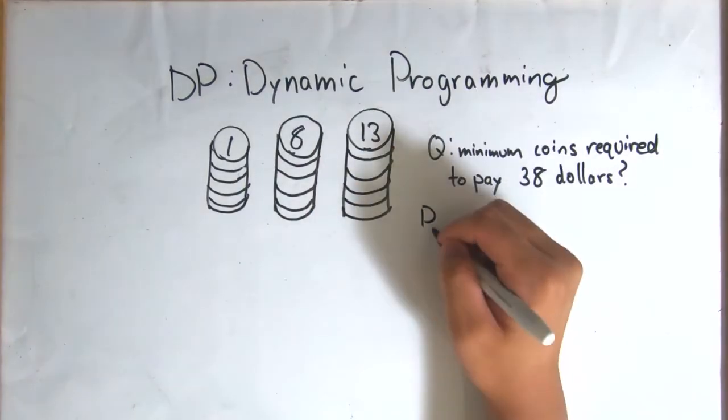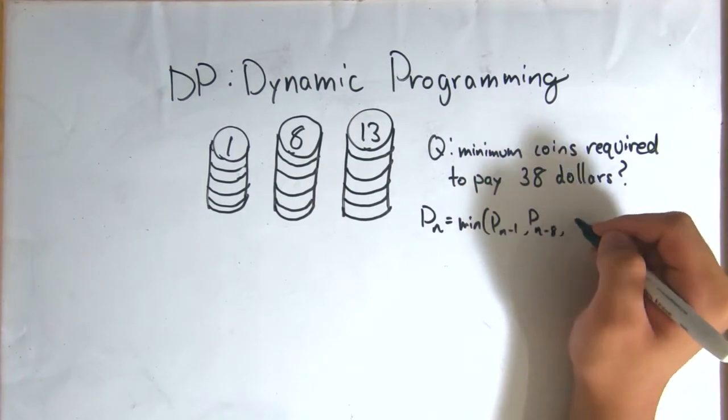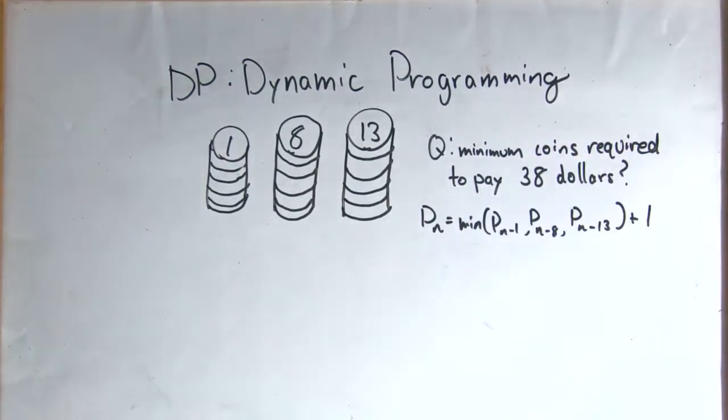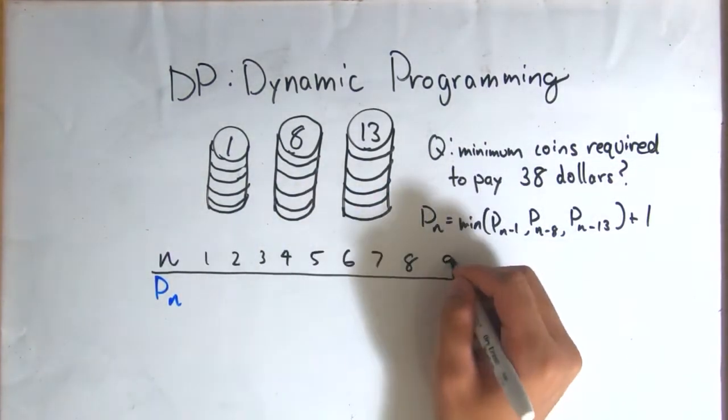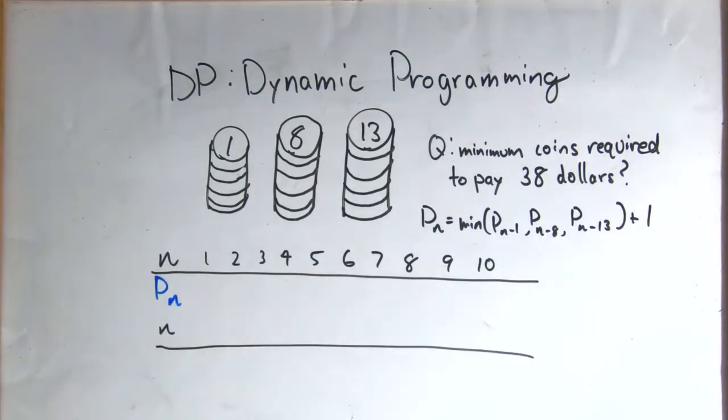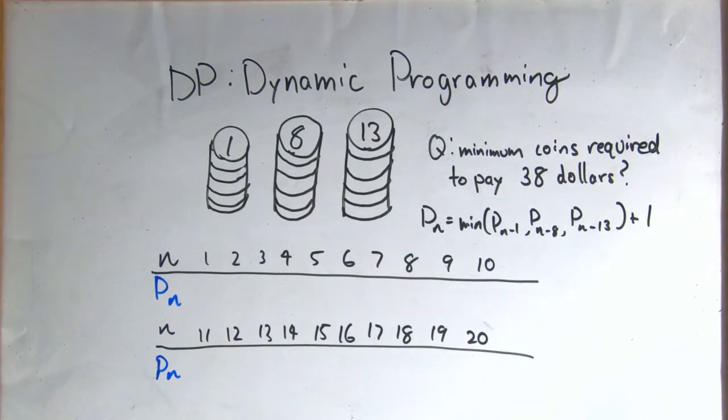where p(n) represented the minimum coins required to pay n dollars, p(n) equals the minimum of p(n-1), p(n-8), p(n-13), plus 1, as we can add one coin to any of the coin combinations that add to n-1 dollars, n-8 dollars, or n-13 dollars to reach n dollars.